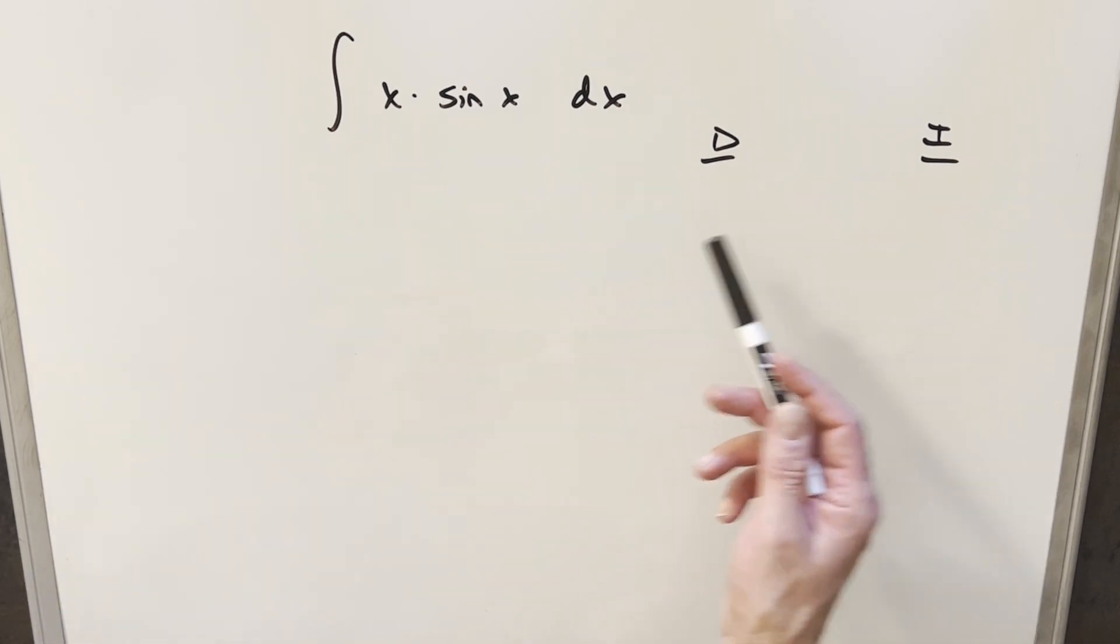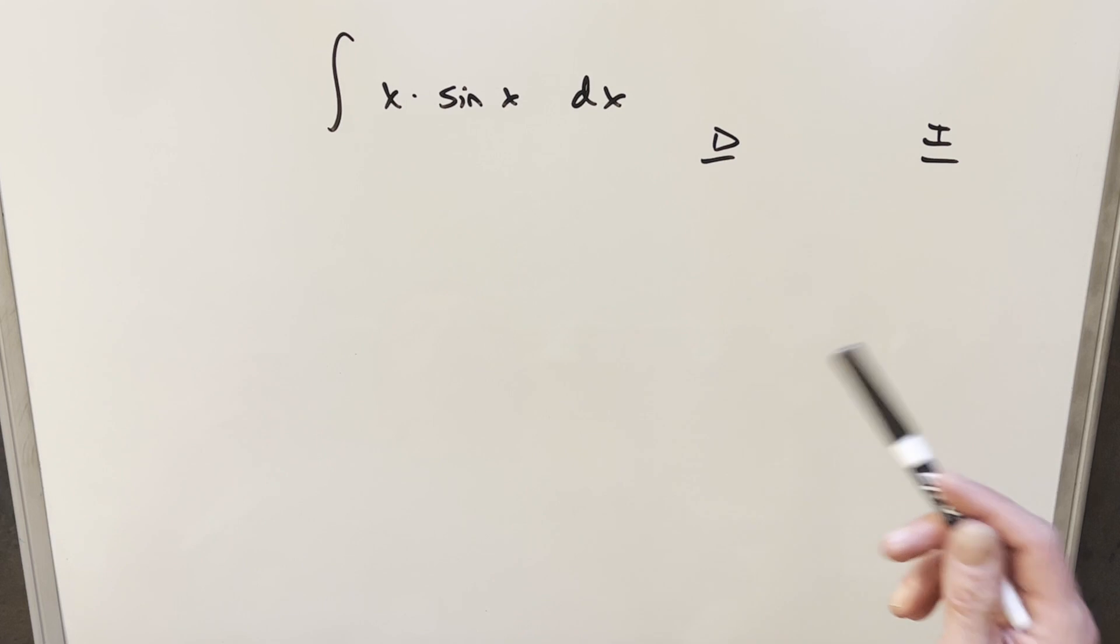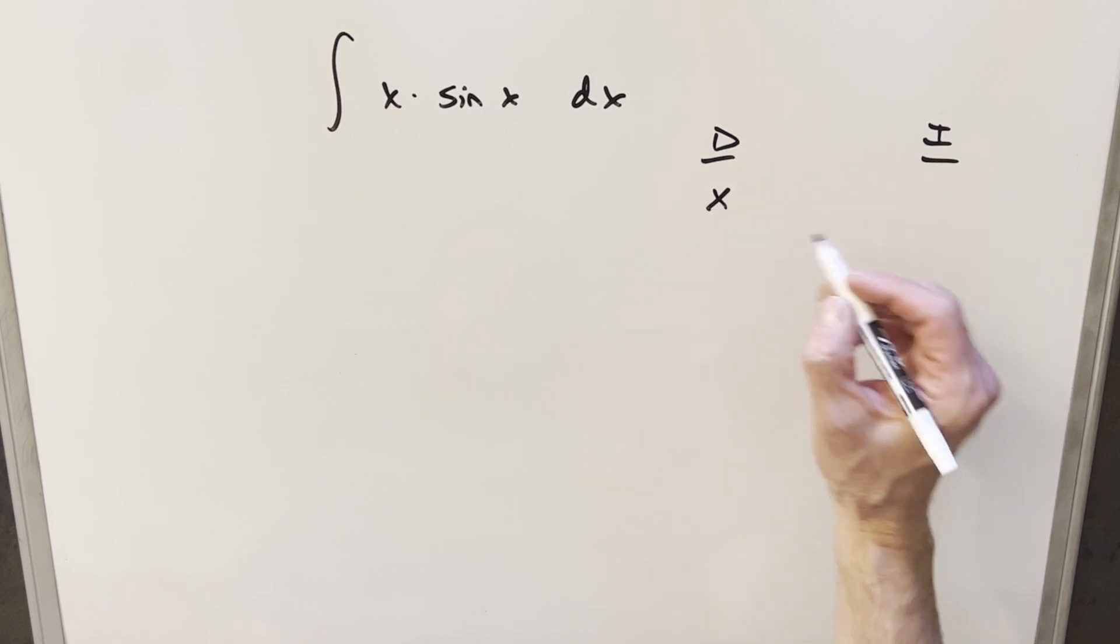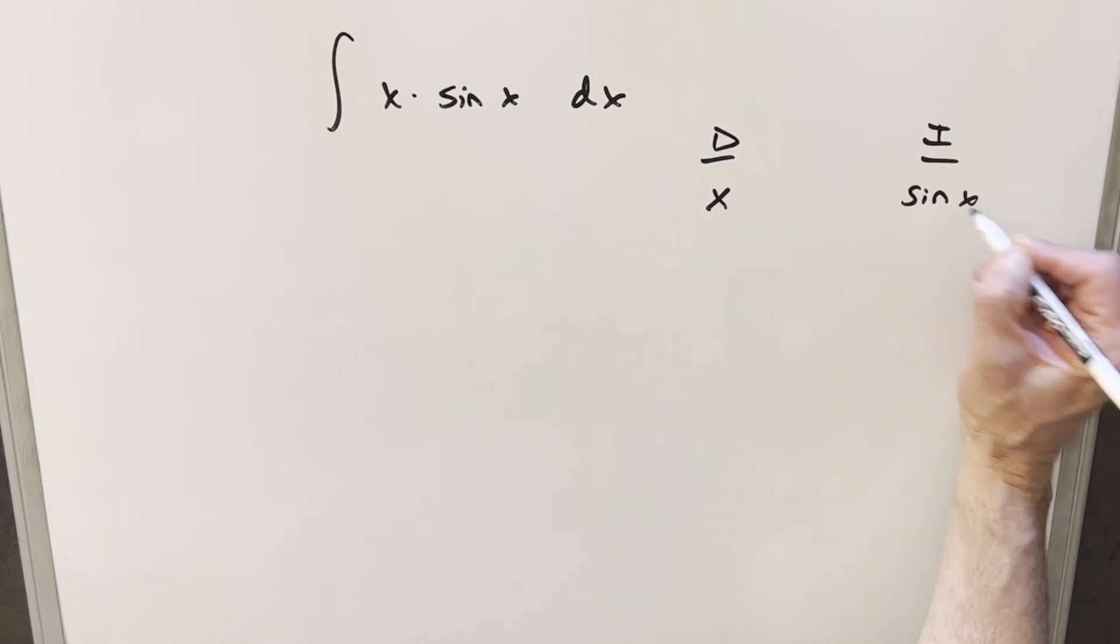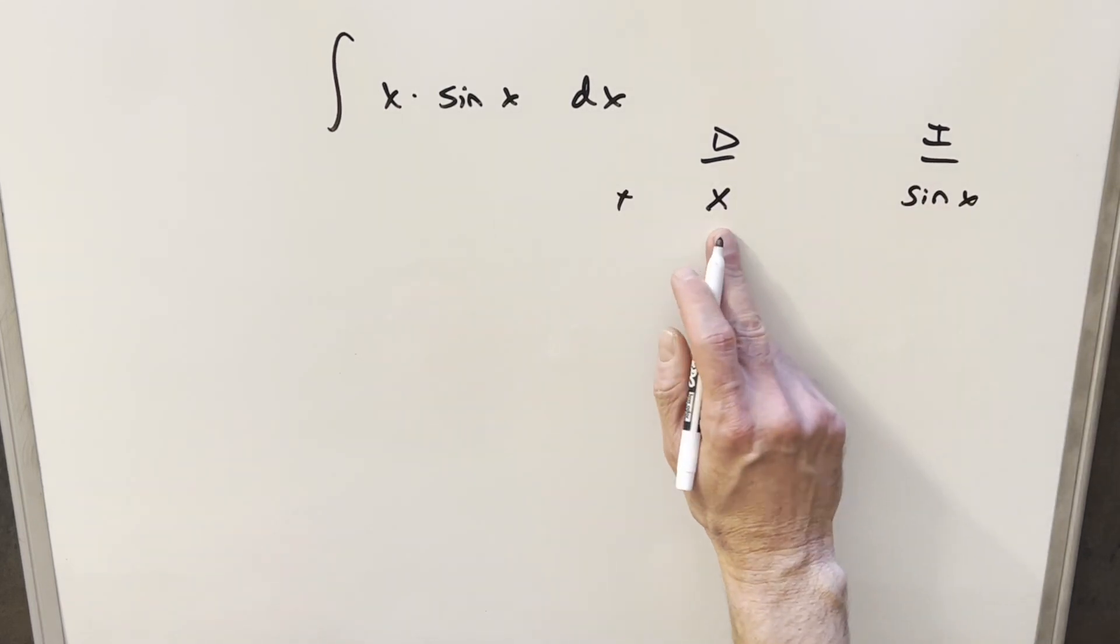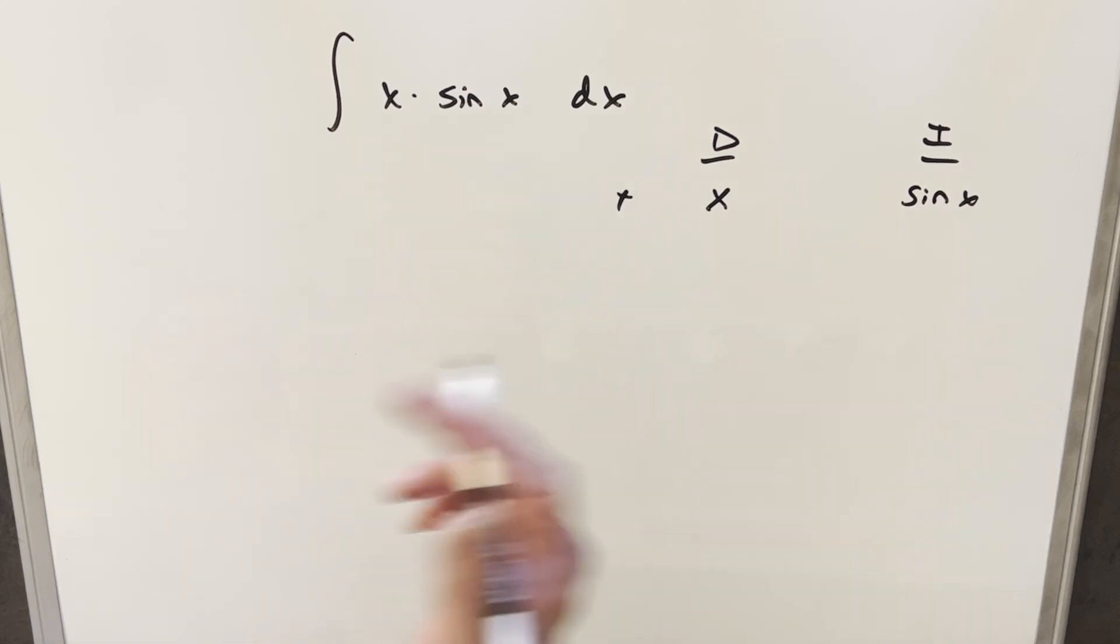For sine x, whether we differentiate or integrate, it's just going to persist over and over again. We're going to get cosine, sine, sine, cosine. But we like to differentiate x typically. When we take a derivative of x, we get one. We do it again, we get zero, and then it finishes really fast.